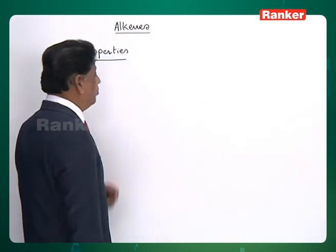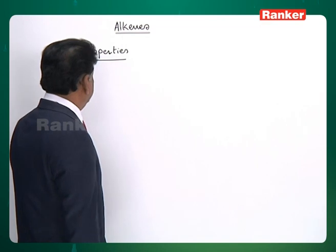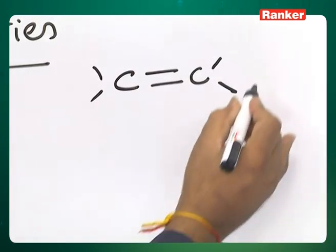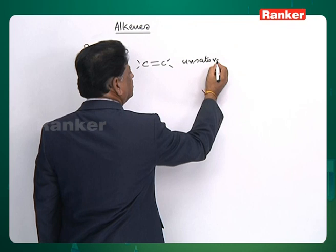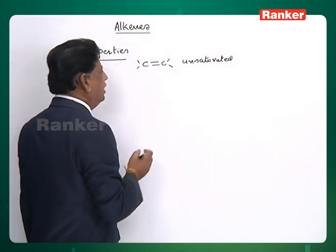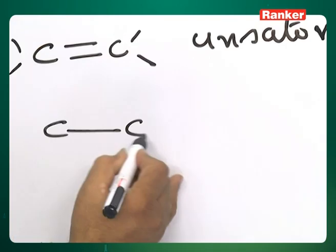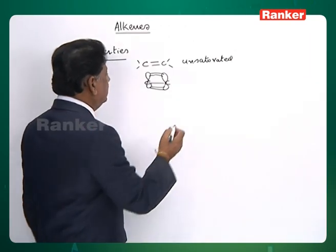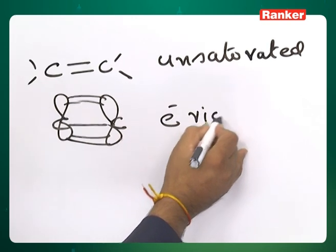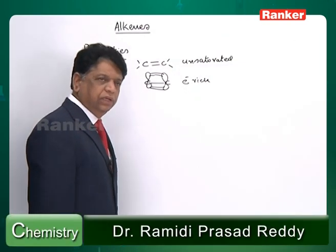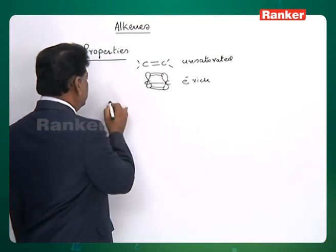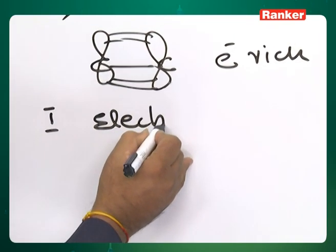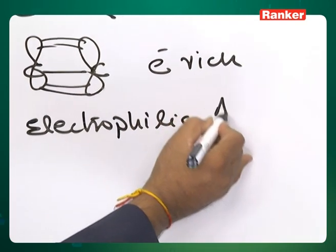Let us take the properties of alkenes. Alkenes have a double bond — they are unsaturated. The bond consists of one sigma bond and one pi bond, making it a loose bond. So electron availability is there; they are electron rich. These two qualities together make the compound special, and therefore they undergo one characteristic reaction: electrophilic addition reactions.